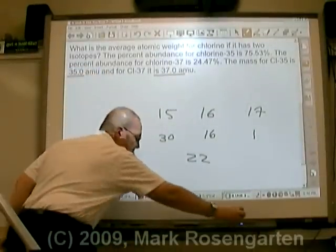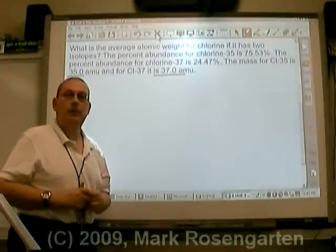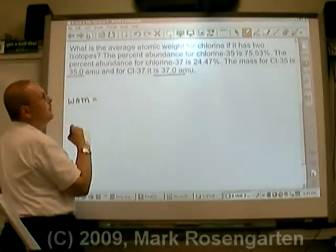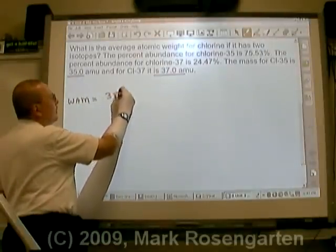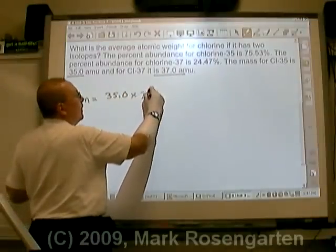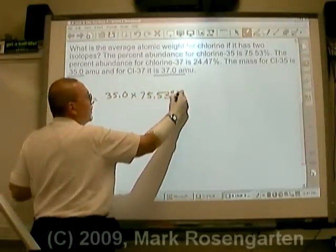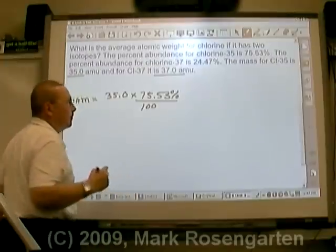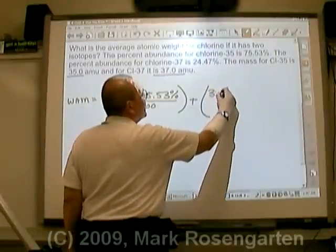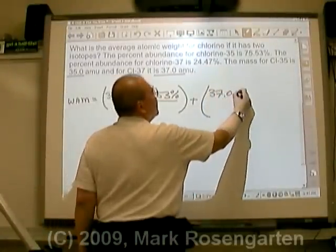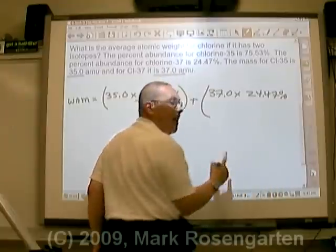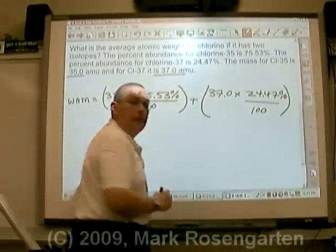So how do we calculate the weighted average mass? The weighted average mass is equal to the mass of the first isotope, which is 35.0, times its percent abundance, 75.53, divided by 100. We're going to take that and add to it the mass of the other isotope, 37.0, times its percent in nature, 24.47%, also divided by 100.